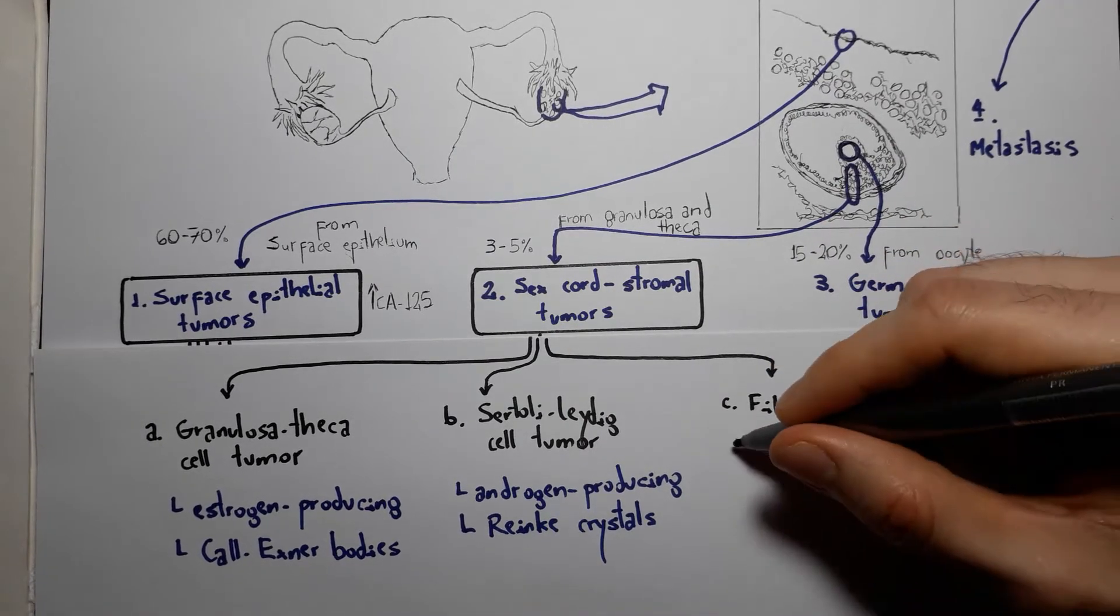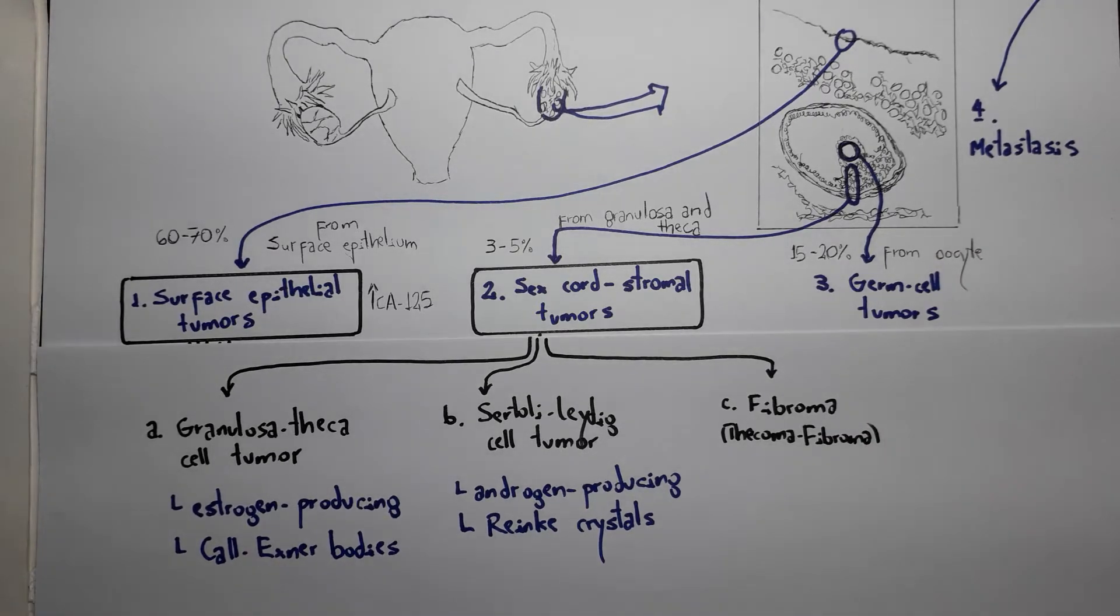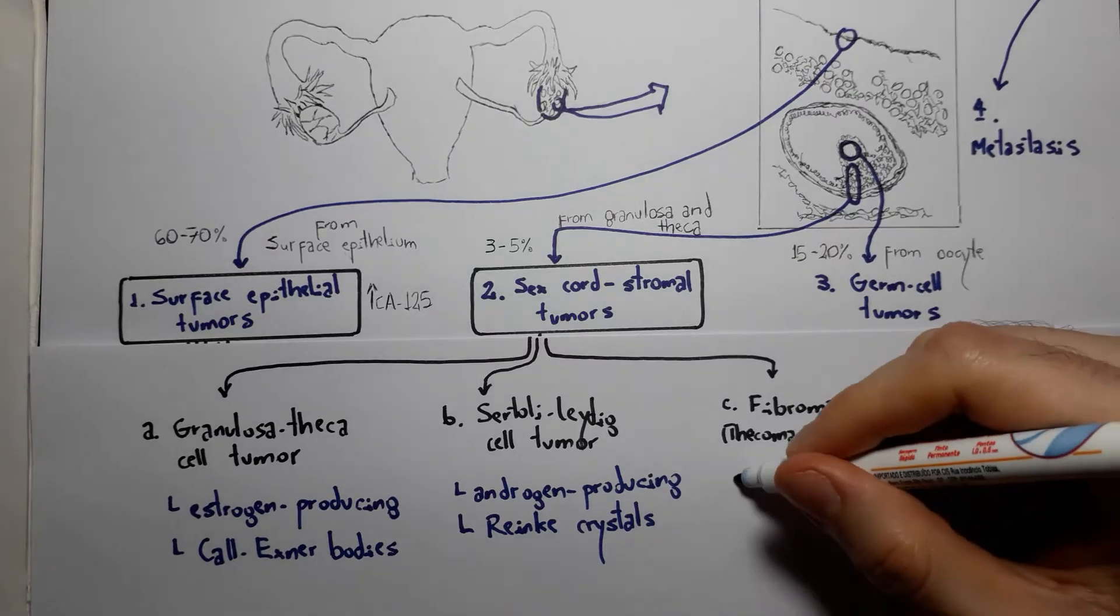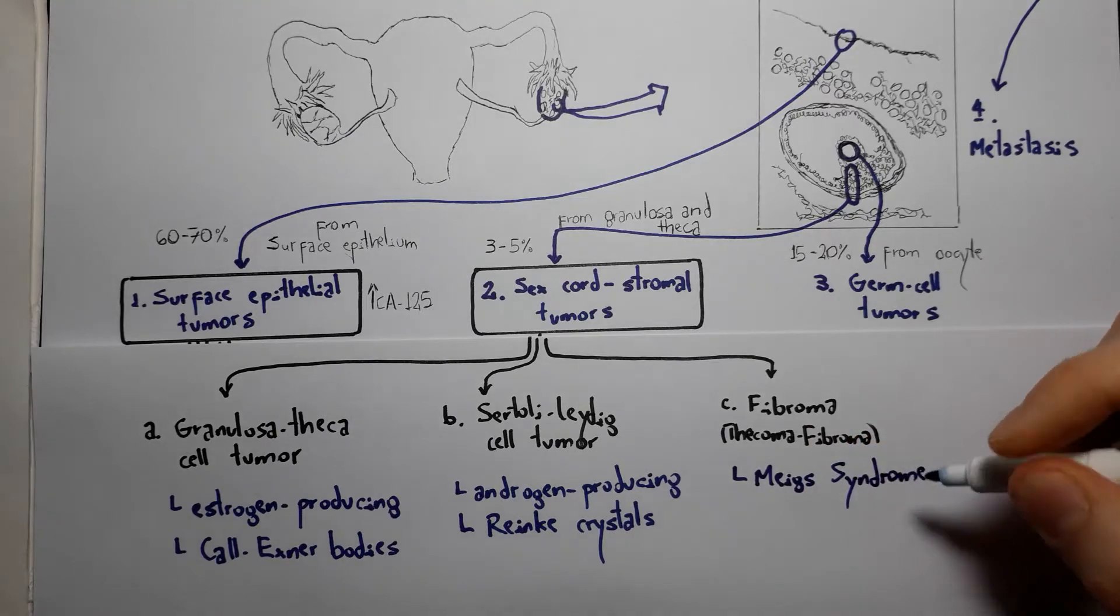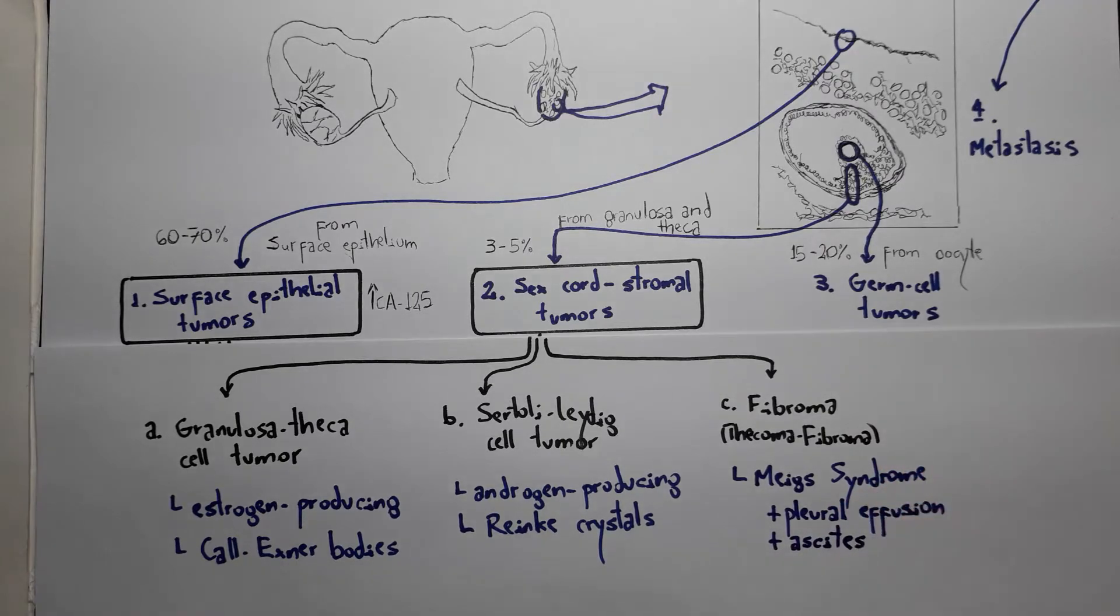Alternatively, you could have a fibroma, which is a benign tumor of fibroblasts, although it usually presents associated with theca cells as a thecoma-fibroma. This tumor is particularly known for Meigs syndrome, which is essentially a fibroma associated with pleural effusion and ascites. The mechanism is not completely known, but since it's a unique presentation - an ovarian tumor with pleural effusion and ascites - it's often asked on boards.